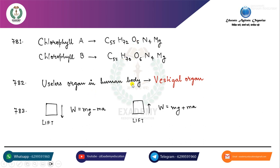Useless organ in human body क्या है? Vestigial organ. Lift में अगर नीचे जाते हो तो W = Mg - ma होता है। इसलिए जब नीचे आते हैं तो हल्का लगता है, और जब ऊपर चढ़ते हैं तो भारी लगता है।